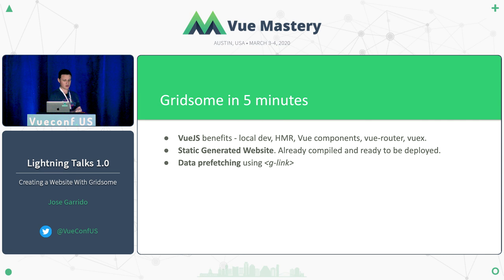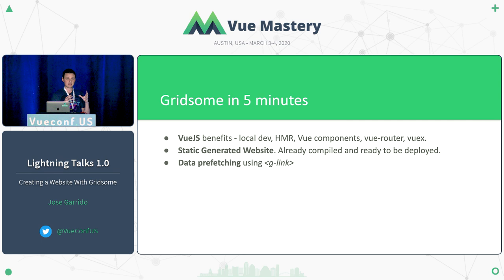With a normal Vue.js app, you use the router-link to route to different places of your application. With Gridsome, you use G-Link. What it provides is: when that link comes into the viewport, it automatically prefetches the data from your CDN. Then when you click the link, the data is already there on your browser, so it feels almost instantaneous.